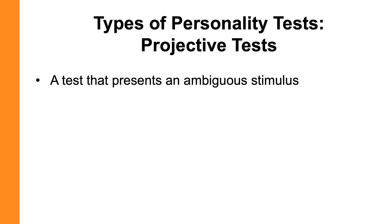So what are projective tests? Every projective test has this common element: it presents some sort of an ambiguous stimulus. This could be a picture, maybe an abstract drawing or an abstract artistic picture, or maybe a scene of two people or a group of people in some sort of a setting that could be interpreted multiple ways. It could be that the experimenter asks you to draw a picture — just draw a picture of a person. What those all have in common is that there is no clear-cut answer, no particular interpretation that is correct or more right or more wrong.